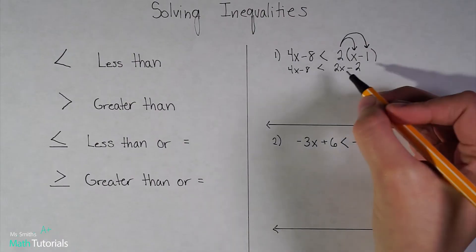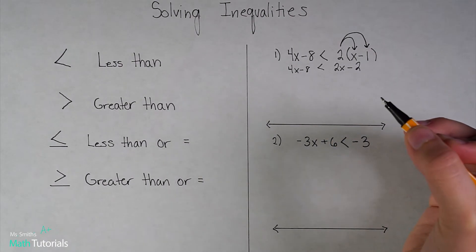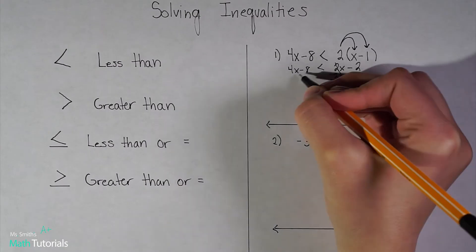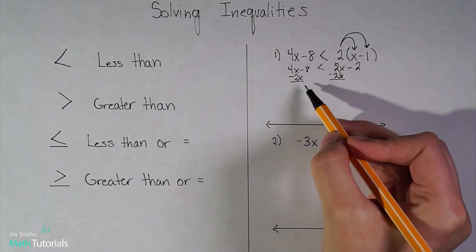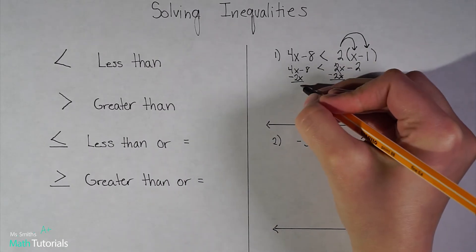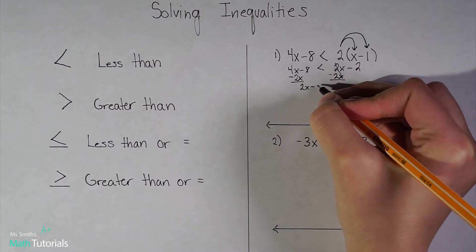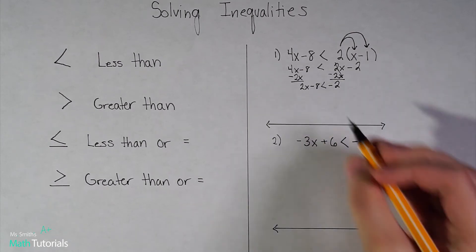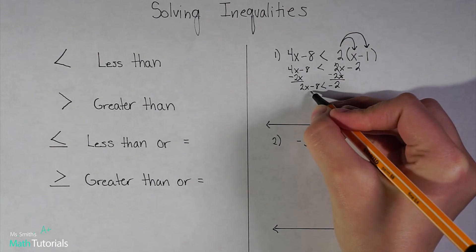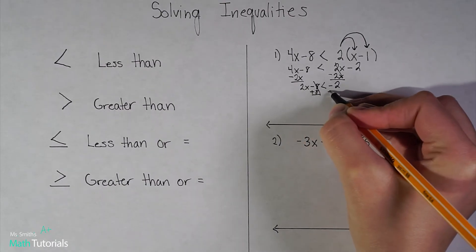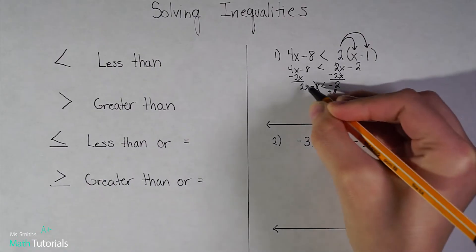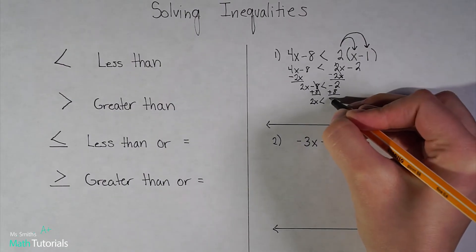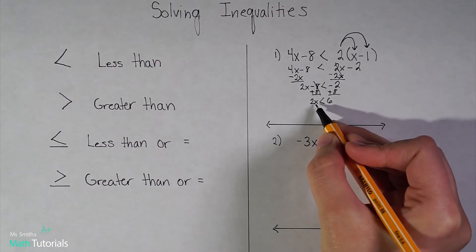This trick only works if we get the variable to the left. So I want to move this as a positive 2 — subtract it and move it over. Combining like terms: 4x minus 2x gives me 2x. Bringing down the minus 8, less than symbol, negative 2. Now I want to get my constants all on the right, so I've got to move this 8 using inverse operations. That gives me 2x is less than negative 2 plus 8, which is positive 6.